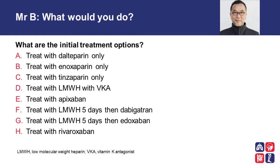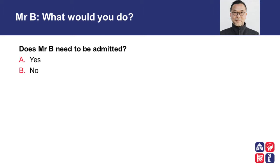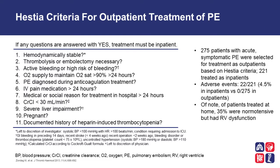What would you do now? These are the initial treatment options, A through H. Moreover, consider this question: does Mr. B need to be admitted to hospital? There are several factors to consider when a patient is being assessed as to whether he or she should go home or be discharged from the emergency department with an acute PE.